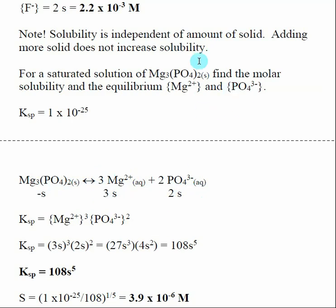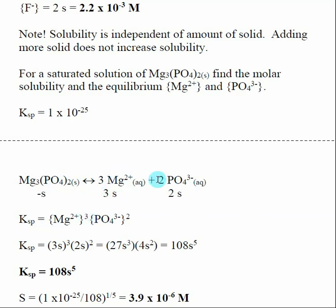To find the molar solubility, we assume S is dissociating from the insoluble salt, making 3S of Mg²⁺ and 2S of phosphate. I then write the solubility product — products divided by reactants, solid excluded, raised to the stoichiometric coefficients. There's a 3 in front of magnesium so it's raised to the third power, and a 2 in front of phosphate so it's raised to the second power. Plugging in: 3S for magnesium and 2S for phosphate.